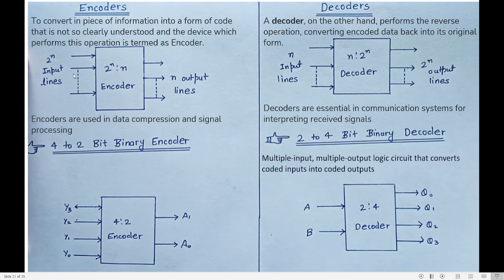So here, the encoder takes the input data — a piece of information — and converts it to a code. This code is called encoded data. That encoded data is given as an input to a decoder, which converts that encoded data back to the original information. So the n outputs of the encoder are fed as input to a decoder, which gives two to the power of n output lines.